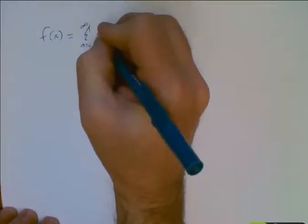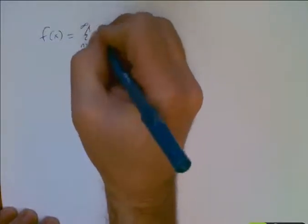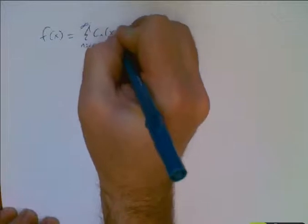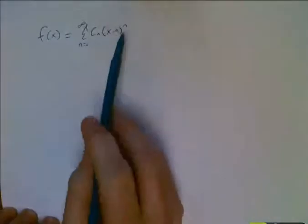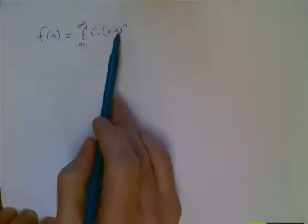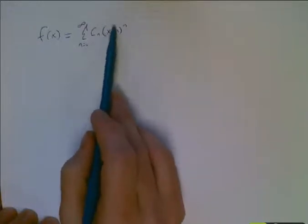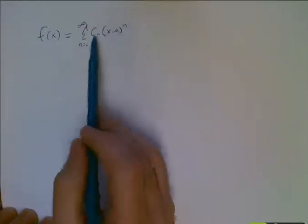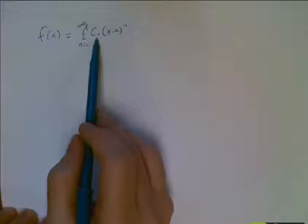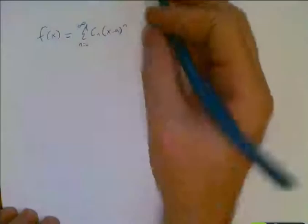So if we want to represent a function as a sort of a generic power series, we basically put it like this, where we have some power of x centered at a, or the series is centered at a, but this gets you your powers. And then there's some constant involved, potentially, for each particular term.